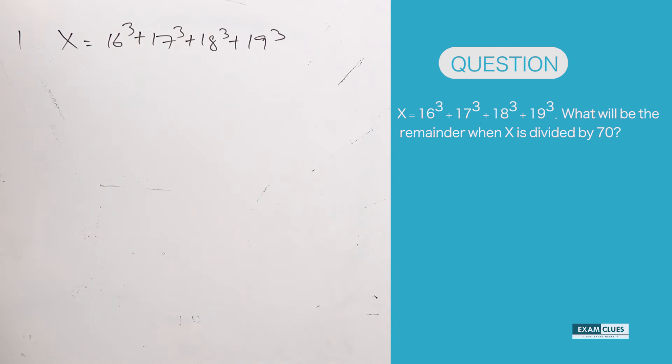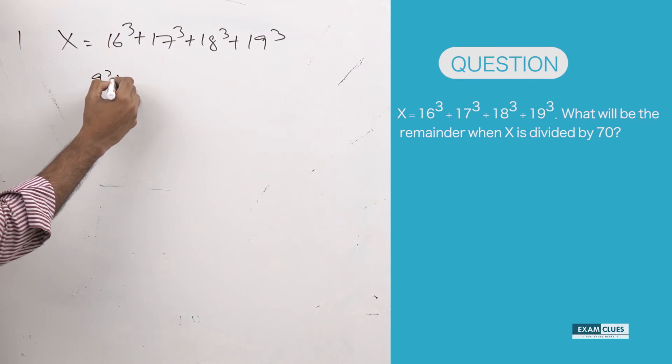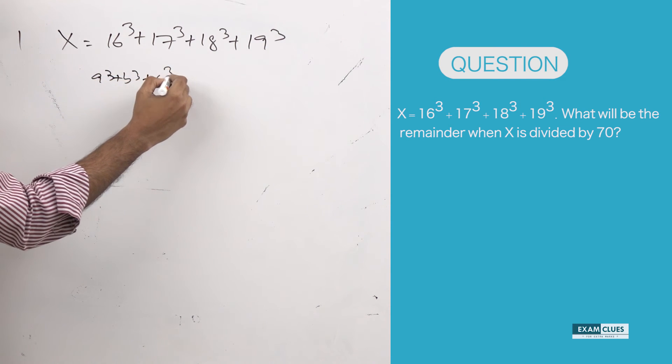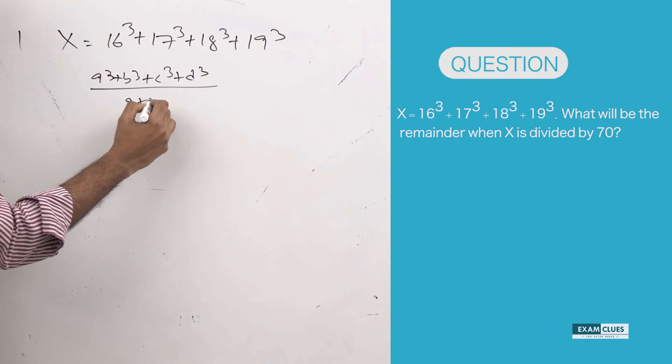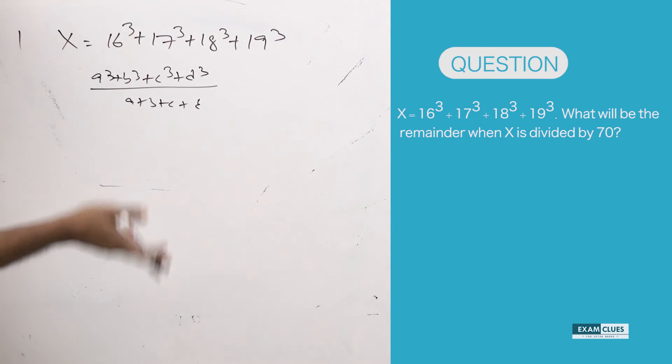Guys, here I do not want you people to have one misconception. If you look at this, some of these digits, because this is in the form of A cube plus B cube plus C cube plus D cube, some of you might be just thinking this is divisible by A plus B plus C plus D because we have proven so.